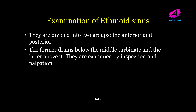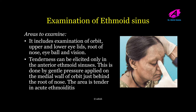Moving on to examination of the ethmoid sinus — the ethmoid sinus is divided into anterior and posterior ethmoid groups. The anterior group drains below the middle turbinate and the posterior group above it. They are examined by inspection and palpation. Areas to examine include the orbit, upper and lower eyelids, root of nose, eyeball, and vision. Look for swelling or congestion of the eyelids. Tenderness can be elicited only in the anterior ethmoid sinus by gently applying pressure on the medial wall of the orbit just behind the root of the nose; the area is tender in acute ethmoiditis.